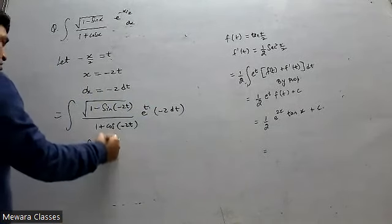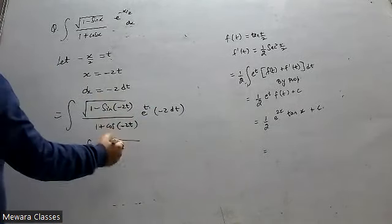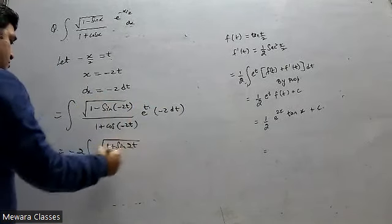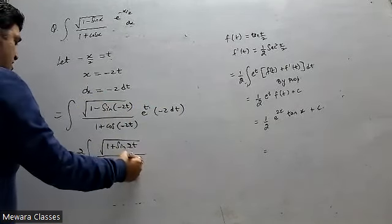Minus 2 bar. Sin minus theta is minus sin t. Cos minus theta is cos t.